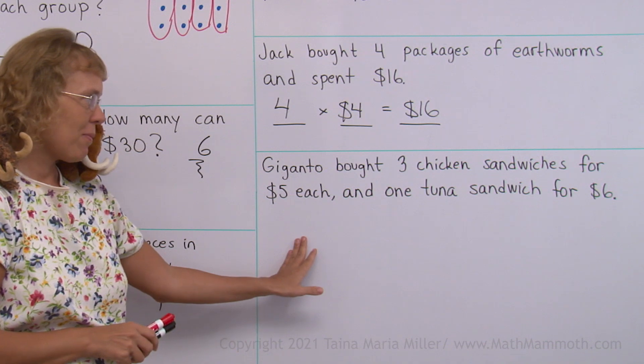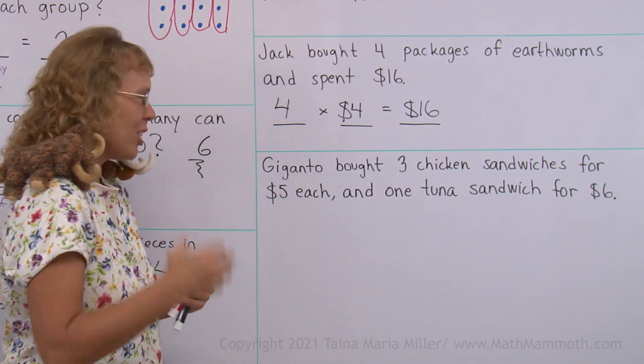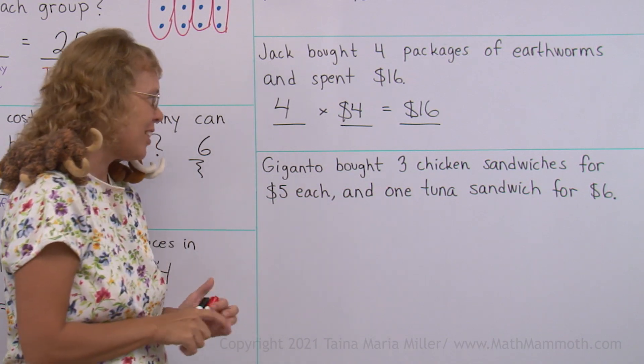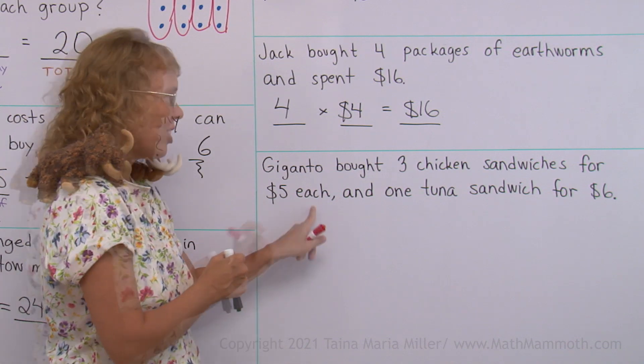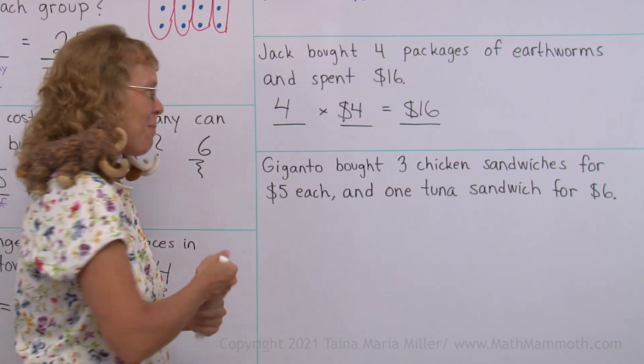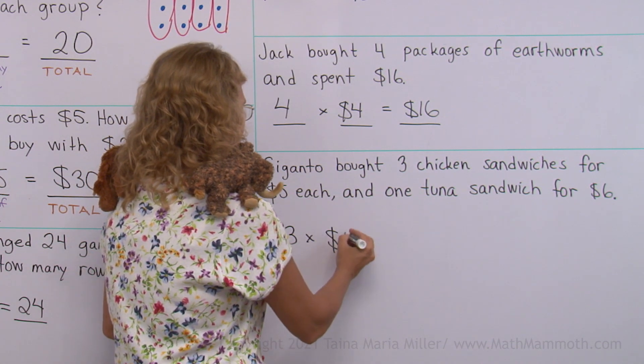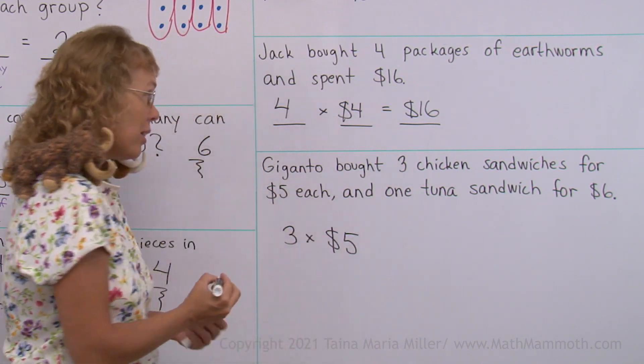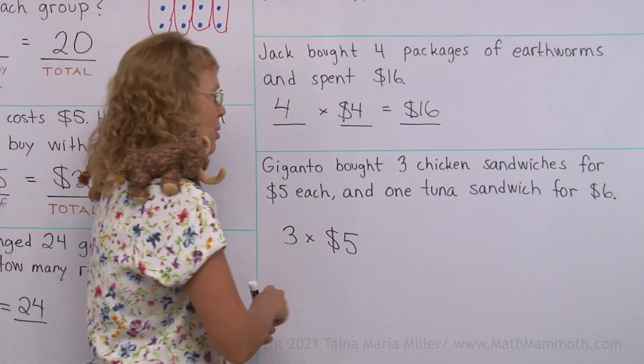What can we solve here? We can solve the total cost. Yeah. How much are you gonna spend Giganto for all this eating? Three chicken sandwiches for five dollars each. Each is there. So we multiply, right? Three sandwiches times five dollars each. And one tuna sandwich for six dollars. So we don't need to multiply anymore. There's just one.